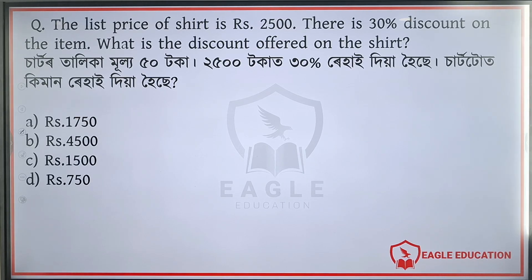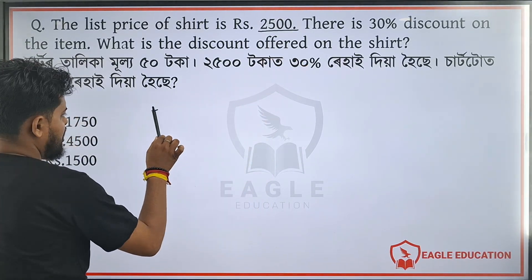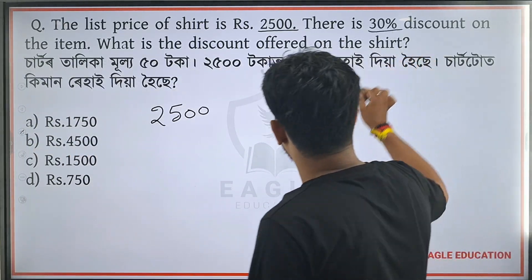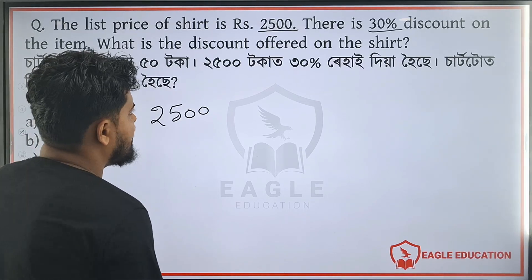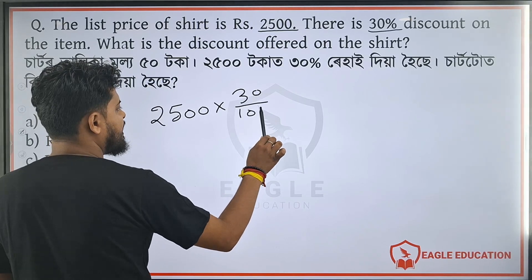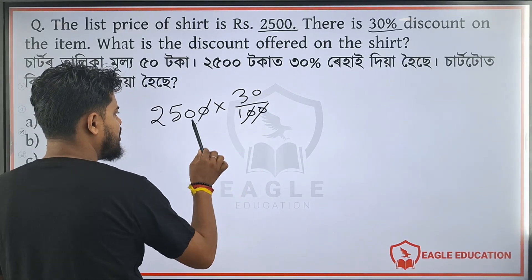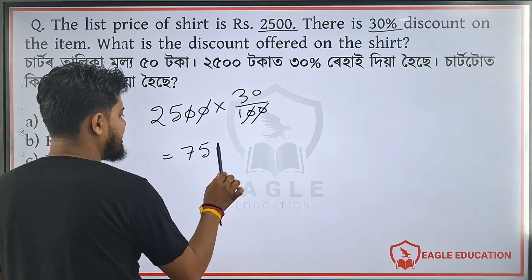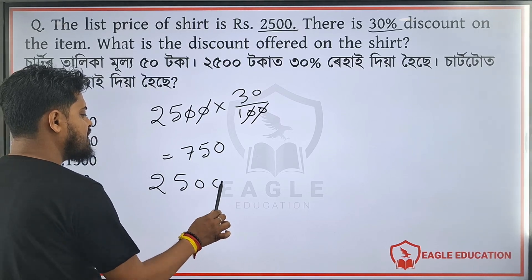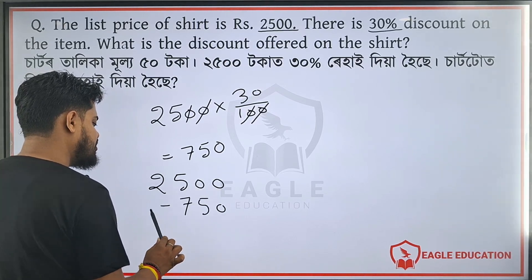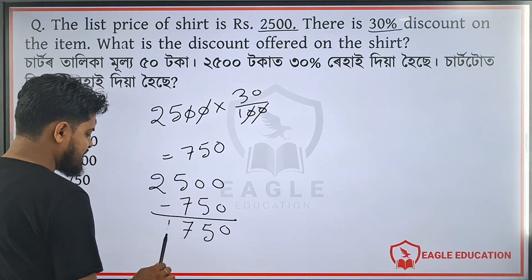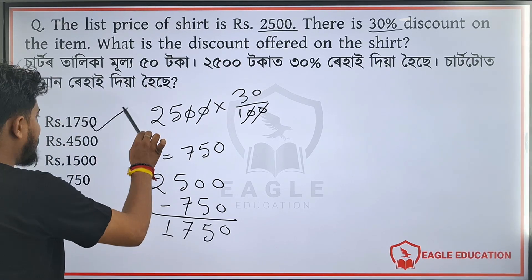The list price is 252 and it is 30% discounted. If the list price is 30% discounted, the discounted price — so the discount for 700 is applied. If you have this discount, this is how to make a 10% discount. So the answer is 1750. Option A is correct.